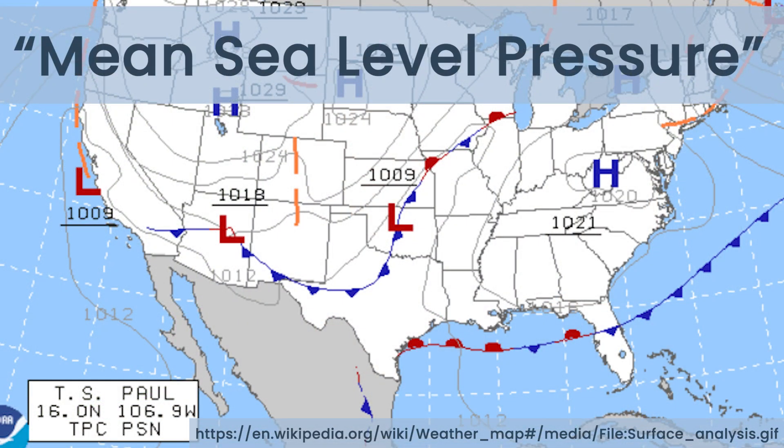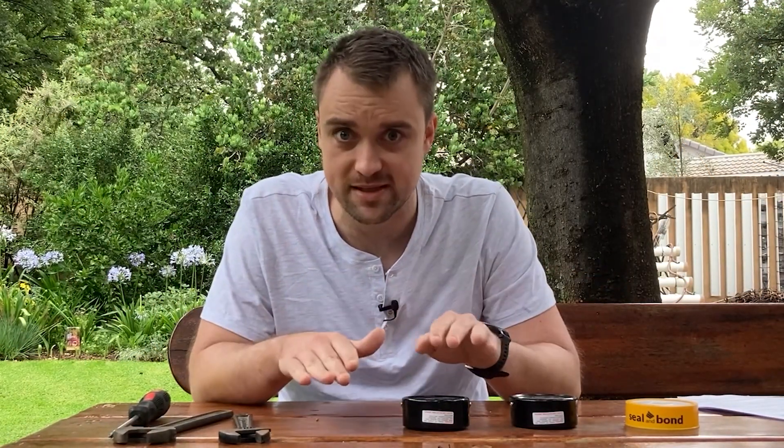If you look at a weather app or any meteorological data, the pressure reported is always adjusted to sea level. So if Johannesburg, which is 1.75 kilometers above sea level, were at sea level, the pressure would be 102 kilopascals. The actual surface pressure is likely around 83 kilopascals. If you live at high altitude, your weather app will always show around 100 kilopascals — that's the sea-level value, not the actual surface pressure.